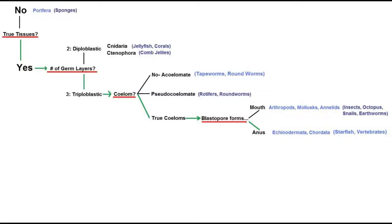When assessing relatedness, there are certain diagnostic characteristics that organisms have. For the most part, these represent a major evolutionary breakthrough — a new toy that's never been seen before. For example, let's look at invertebrates and the diagnostic characteristic of true tissues. The only animals which lack them are sponges; all others have them.